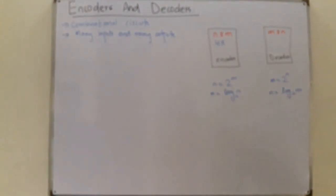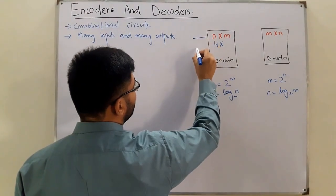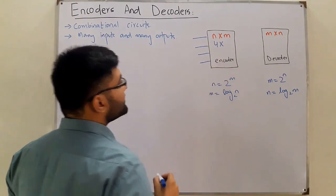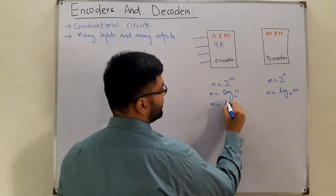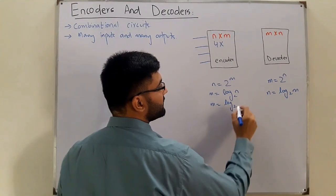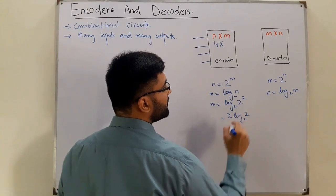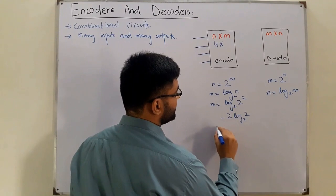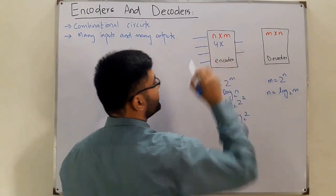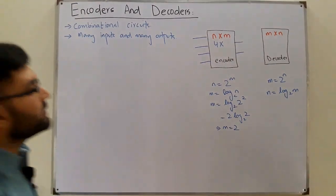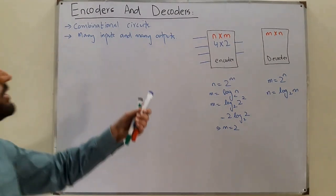Let's say we have four input lines — 1, 2, 3, and 4. How many output lines do we need? m = log₂(4) = log₂(2²) = 2×log₂(2) = 2×1 = 2. So the number of output lines is 2, making this a 4×2 encoder.